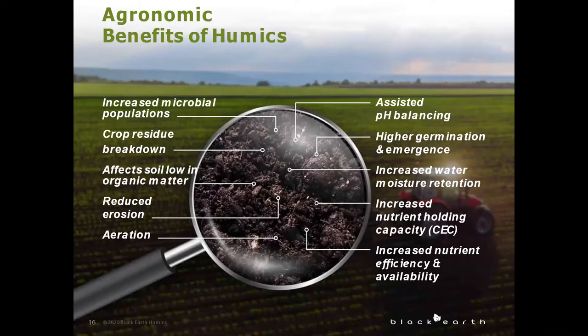Humic acid in the root zone equates to higher germination rates as well as faster emergence and more seed vigor. Having a healthy root zone for your plant will give it its best start. Humic acids will also increase water retention, which means your plants have the moisture when it's needed. Black Earth humalite holds up to seven times its weight in water, and it's looking like a lot of us could use a little bit of that moisture this year because it seems to be really dry so far.